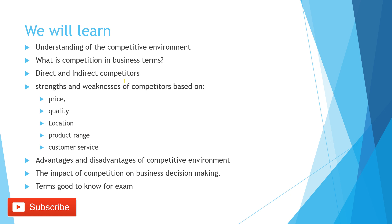In this lesson we will learn about understanding the competitive environment and competition in business terms. We will move on to learn about direct and indirect competitors, and understand the strengths and weaknesses of competitors based on price, quality, location and so on. We will also understand the advantages and disadvantages of the competitive environment and the impact of competition on business decision making.